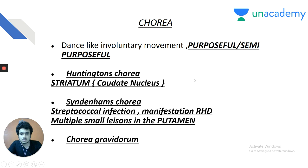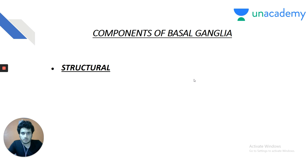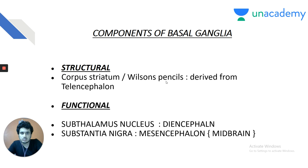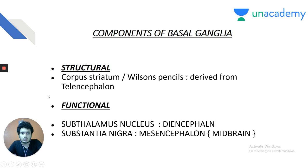The structural components of basal ganglia include the corpus striatum derived from the telencephalon. Functional components include the subthalamic nucleus (derived from diencephalon, lying below the thalamus) and the substantia nigra (derived from mesencephalon, i.e., the midbrain). Anything derived from telencephalon is a structural component of basal ganglia; subthalamic nucleus and substantia nigra are functional components.